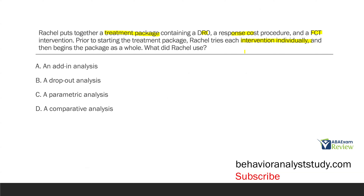More specifically, what type of component analysis? Looking at our answer choices: add-in analysis, drop-out analysis, parametric, and comparative analyses. We know it's not a comparative analysis because it is a treatment package. We know it's not a parametric analysis because a parametric analysis examines dosage — how much of something. Within an add-in analysis, we try each intervention individually and then use the package as a whole. The drop-out is essentially reversed — you remove one piece and look at the results. Rachel tried each intervention first, then began the package as a whole, so she used an add-in analysis, which is a type of component analysis.